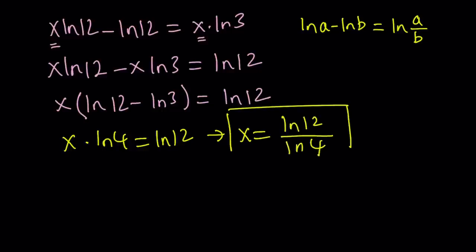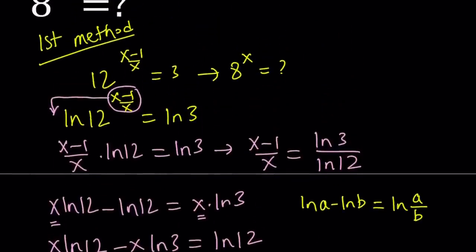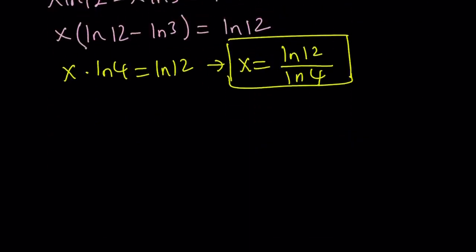And then from here we can write the x as ln 12 over ln 4. Let's leave it like that. You don't have to simplify anymore. Let's leave it at that. Now we're going to deal with the question. The question is asking for 8 to the power of x. And we know what x is. We don't need the numerical value. We can leave it like that. So that's the exact value.